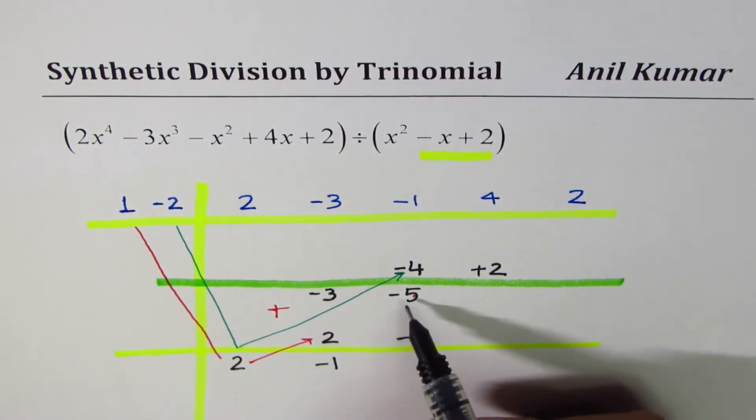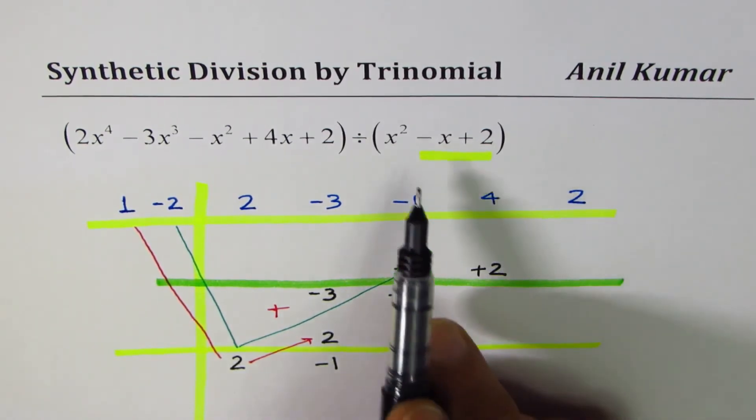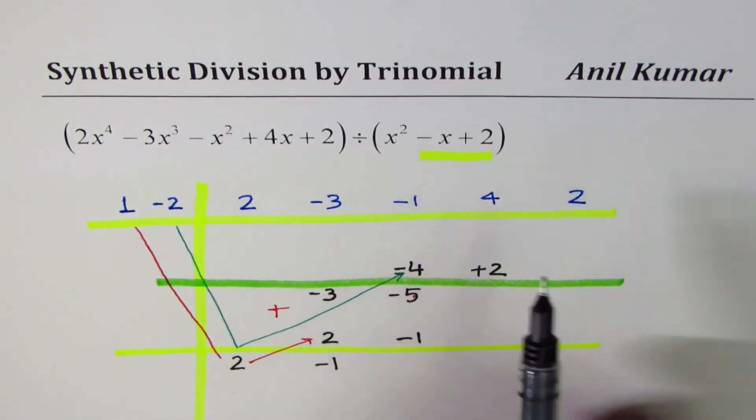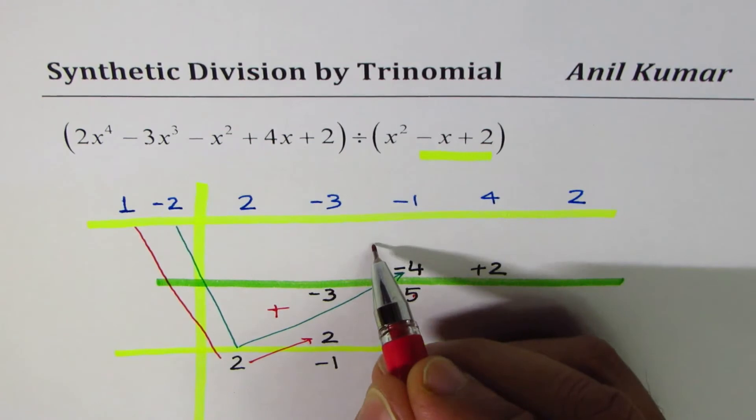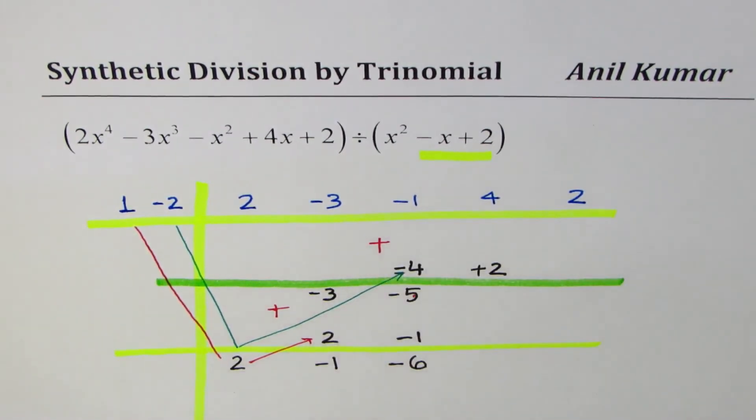Now we have a number to add. This line helps while dividing with the trinomial. Minus 5 plus minus 1 is minus 6. So you get a number there. You adopt the same method of addition in the first layer also.